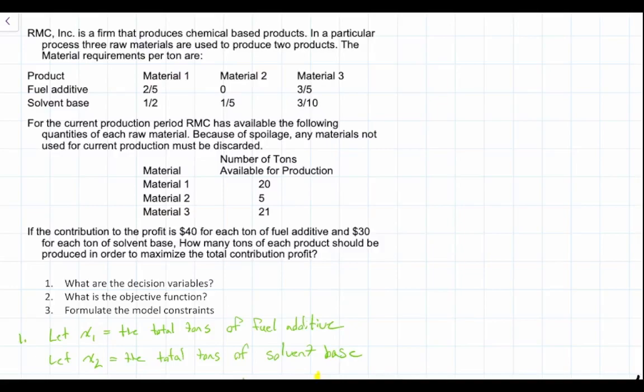In this video, we're going to continue our series of videos solving a simple linear programming problem with two decision variables and a maximization objective function. If you need to review decision variables, the objective function, model constraints, graphing, or the corner point method, please see a previous video. In this video, we're going to use the objective function to help us solve for the optimal solution.